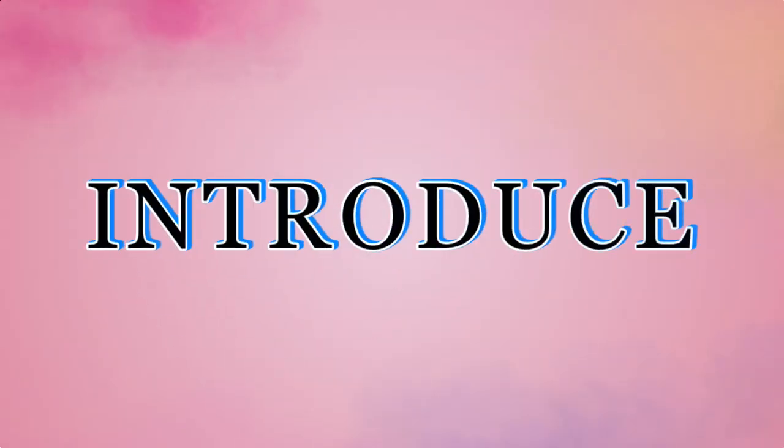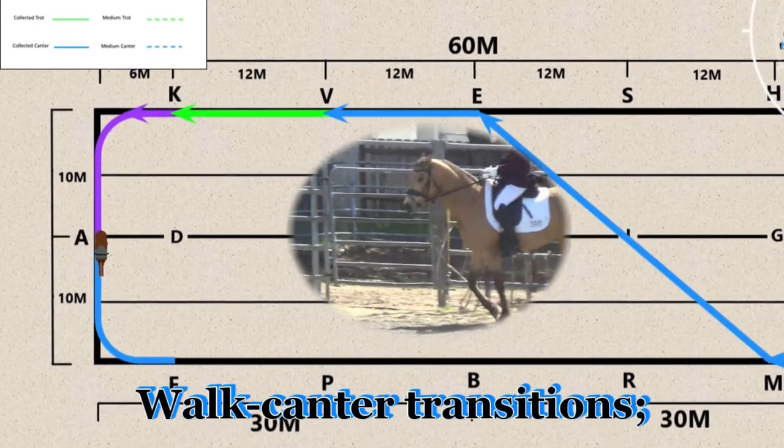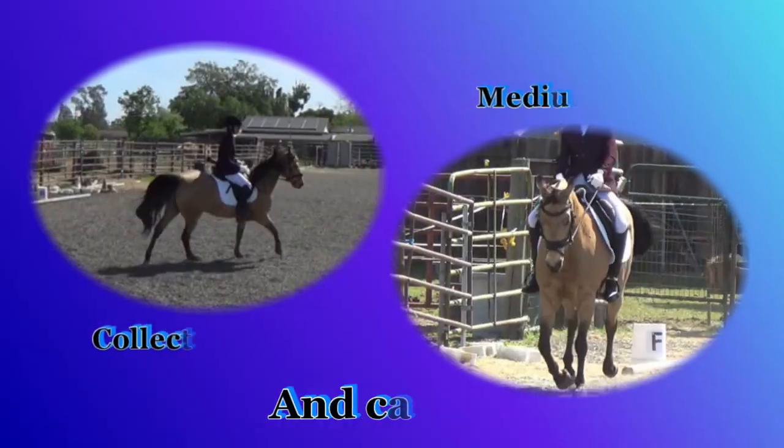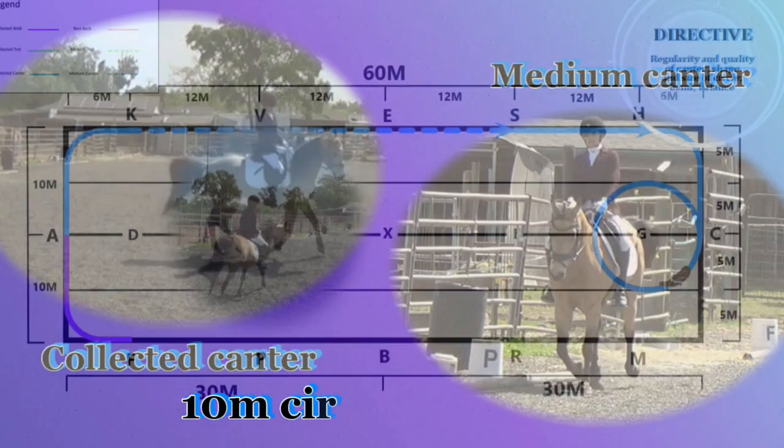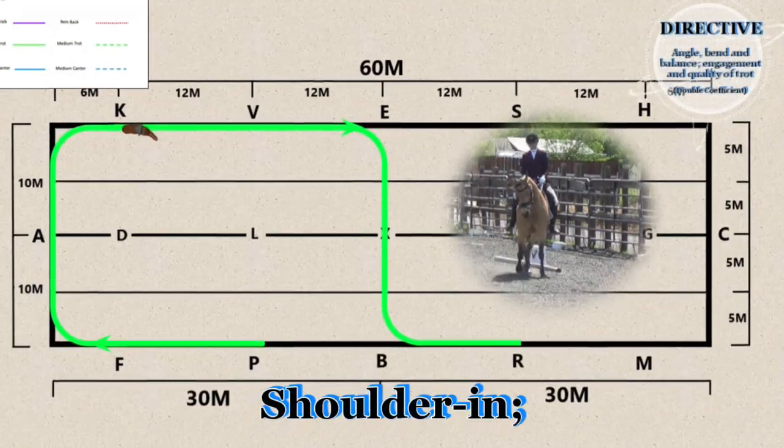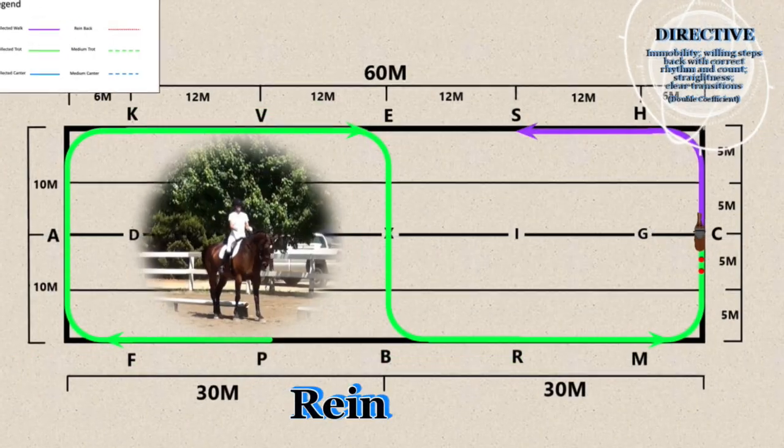Introduce walk-canter transitions, collected and medium trot and canter, 10-meter circle at canter, shoulder in, rein back.